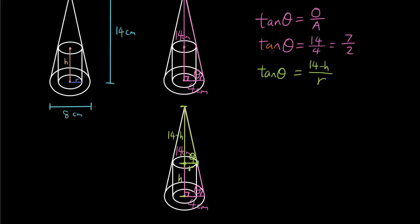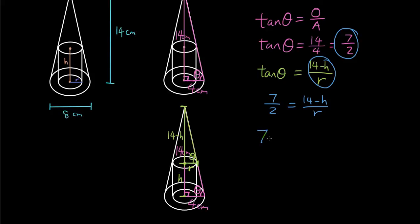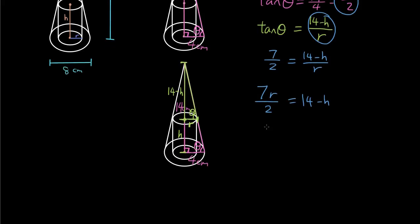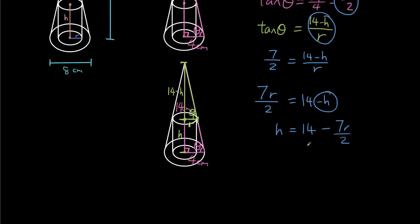Since both tan theta values are equal, we can say tan theta equals opposite over adjacent, which in the smaller triangle is (14 minus h) over r. Since the top tan theta equals the bottom tan theta, we have 7 over 2 equals (14 minus h) over r. Rearranging: 7r over 2 equals 14 minus h, so h equals 14 minus 7r over 2. We now have an expression for h with respect to r.